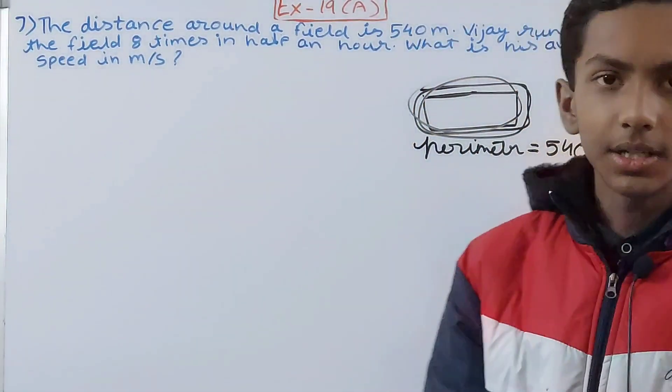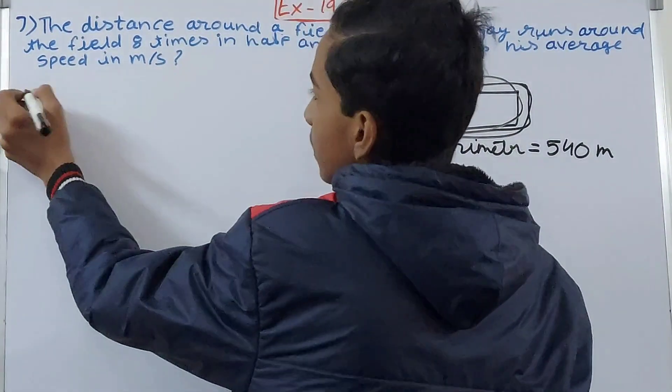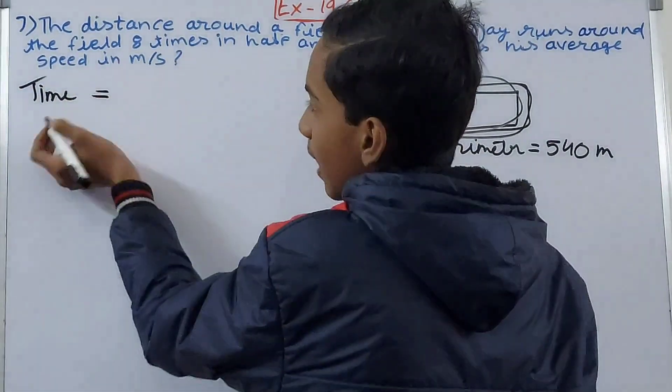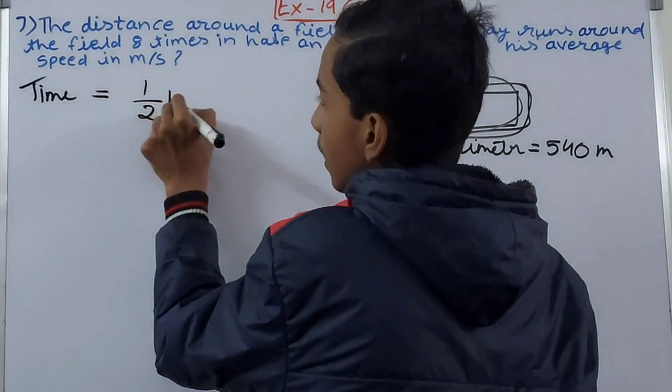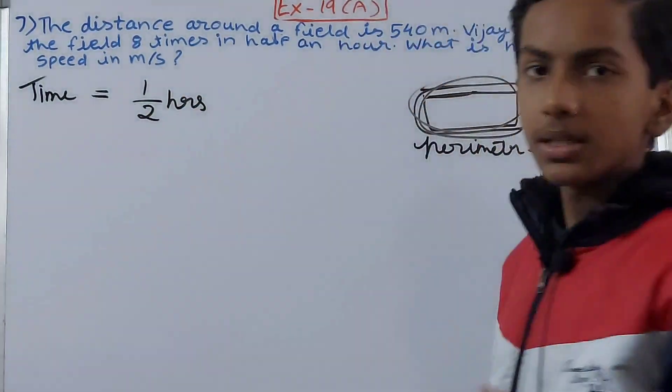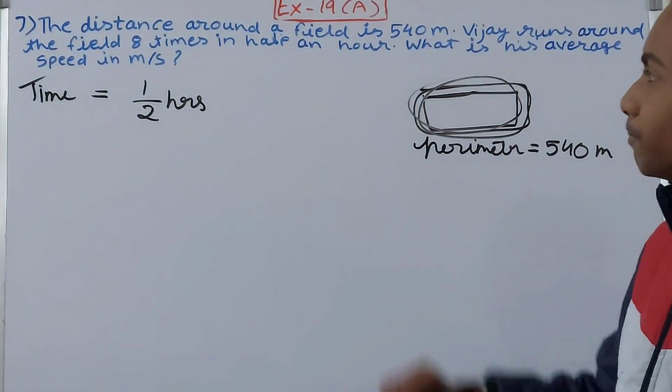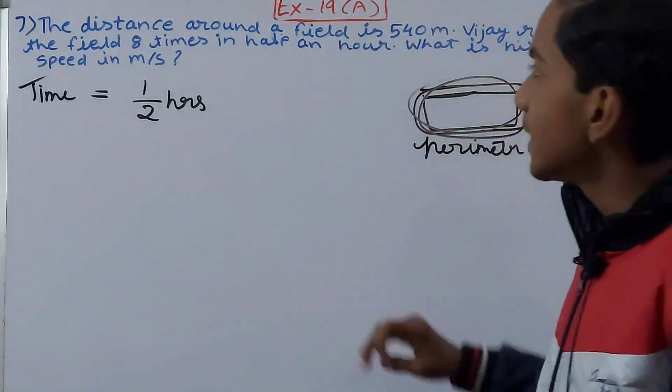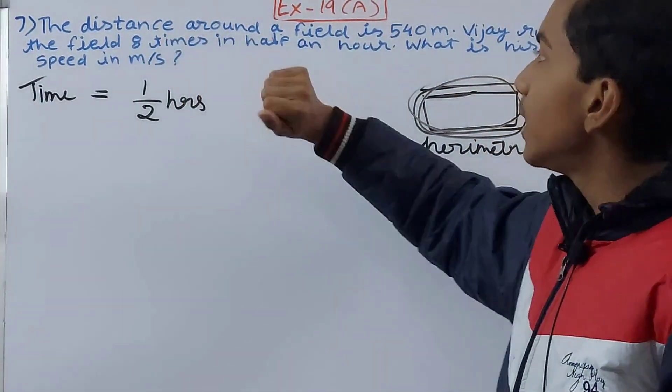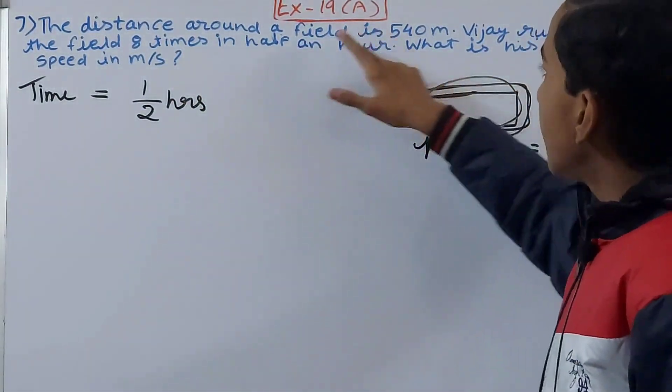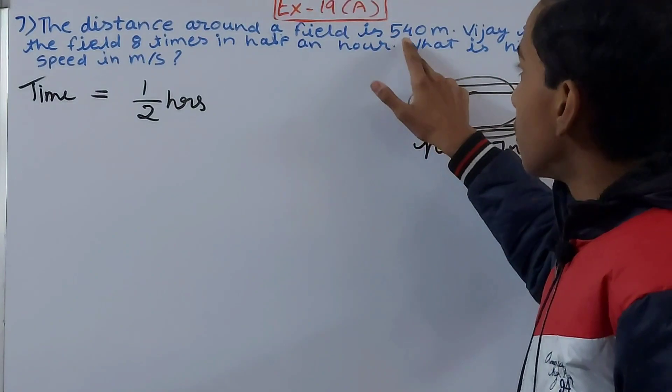So first of all, we know the time here is half an hour. So 1 upon 2 hours - half an hour means half of an hour, 1 by 2. Now you see this - it says that he runs around it 8 times in half an hour. Time we have gotten is hours.